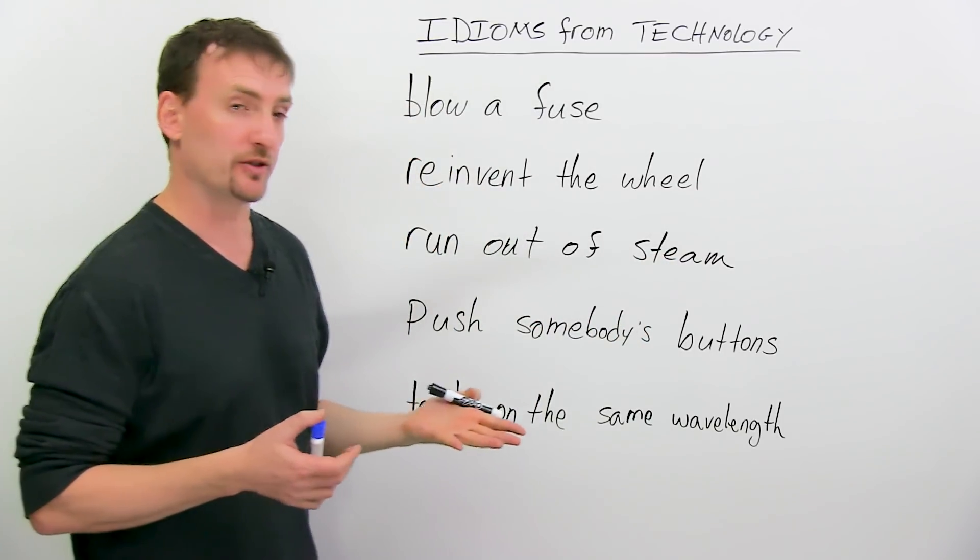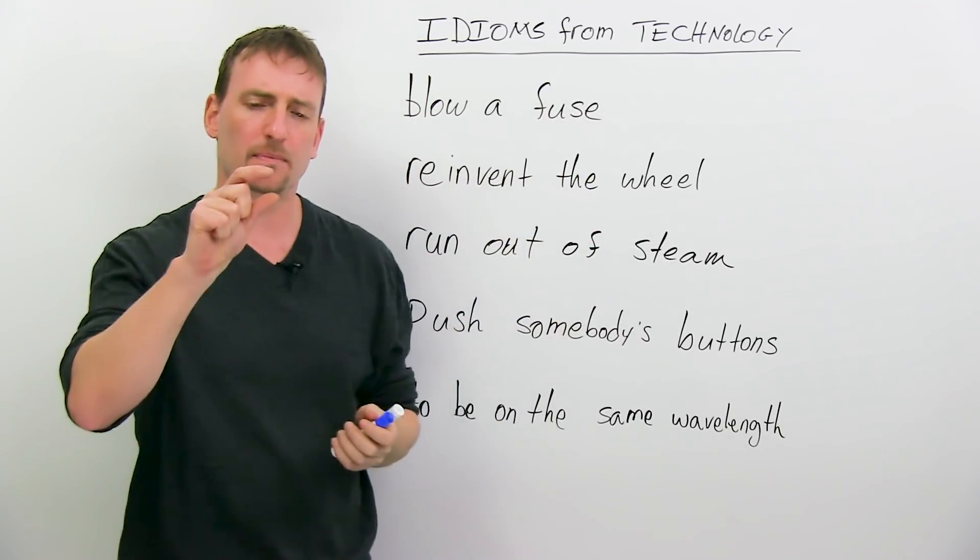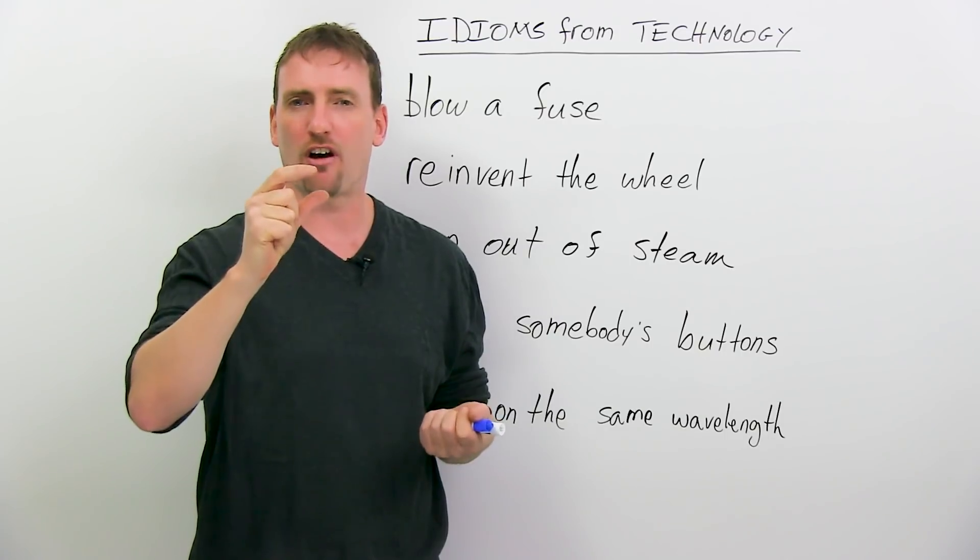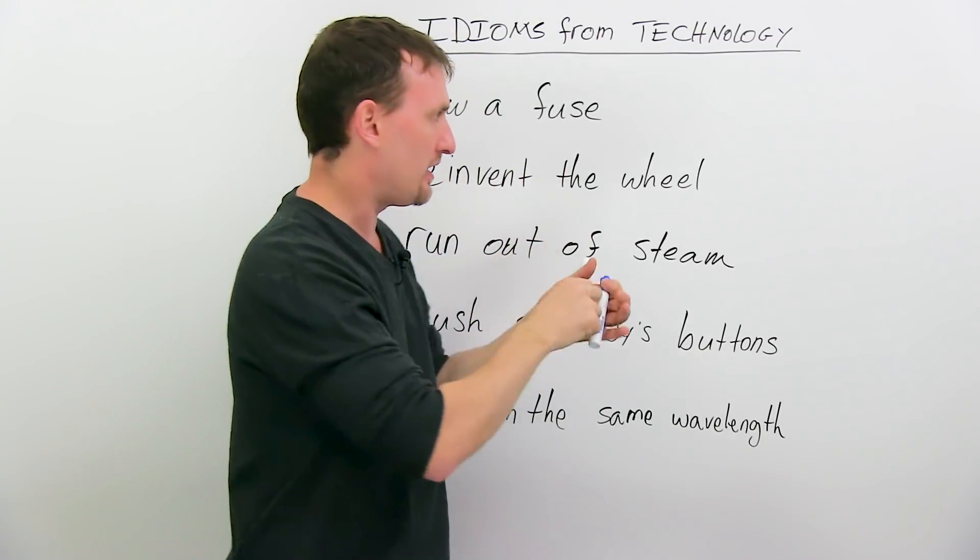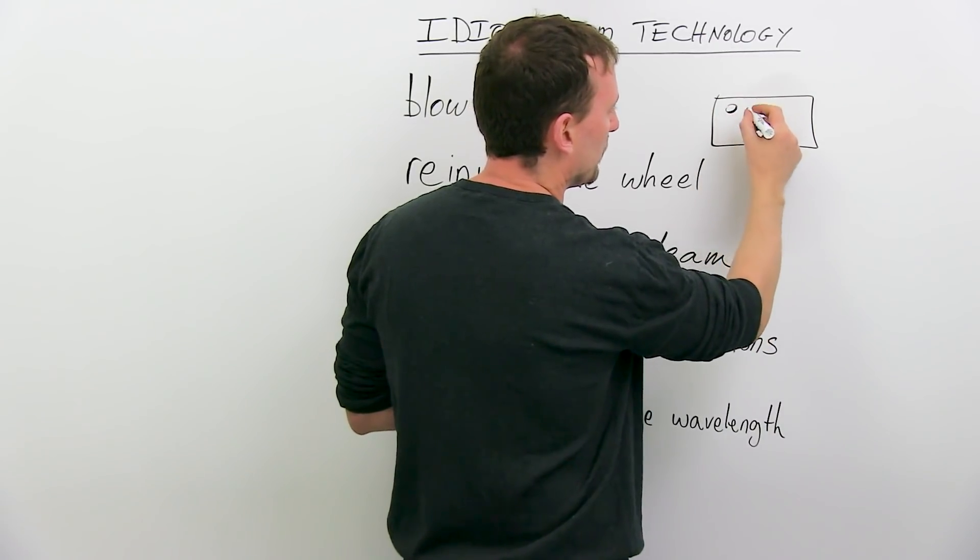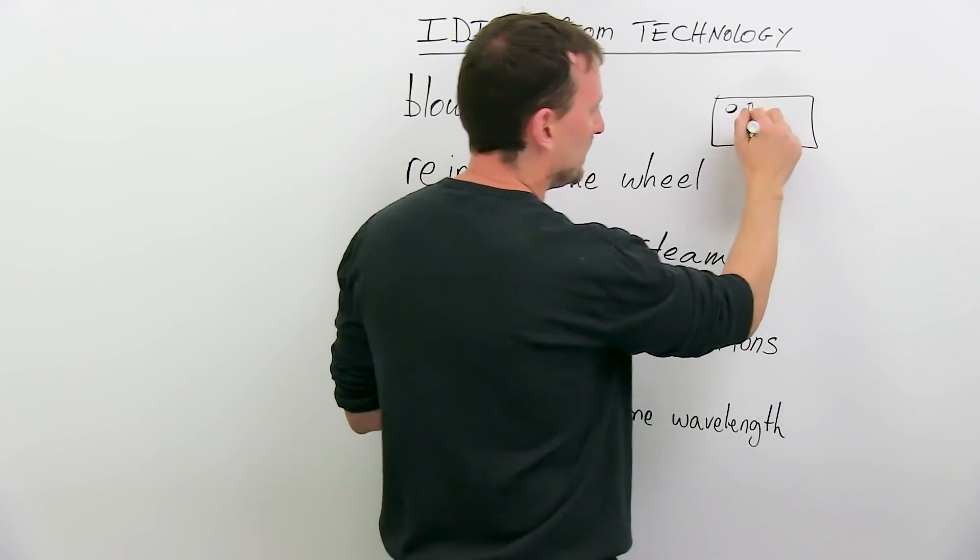Let's start with to blow a fuse. A fuse is like a little piece, it looks like glass, it's sometimes plastic, it's a little electronic connector that you have in your circuit box.